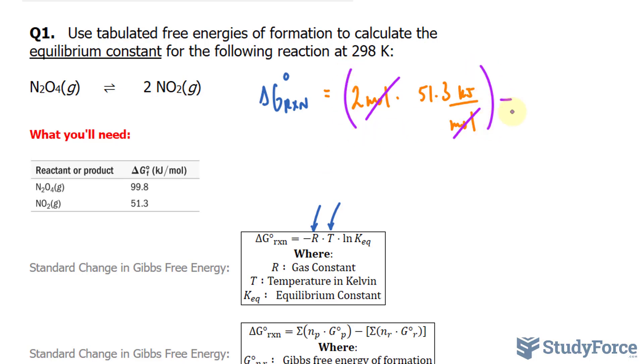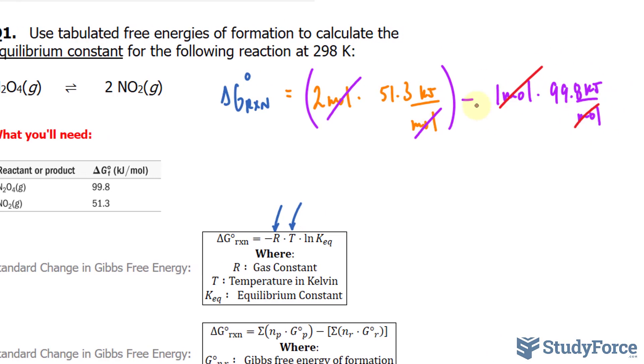We will subtract this amount with what's found in the reactants. We have one molecule of that, so I'll write down one mole times the free energy of formation of 99.8 kilojoules per mole. Once again, this mole unit and this mole unit cancel out.